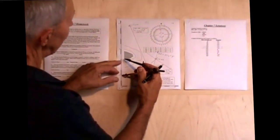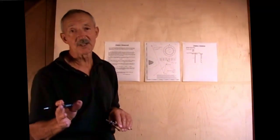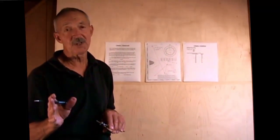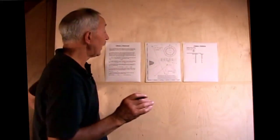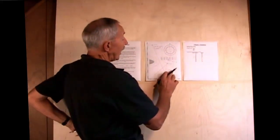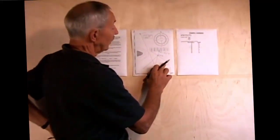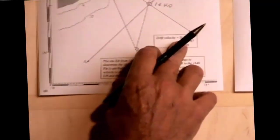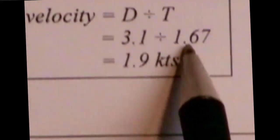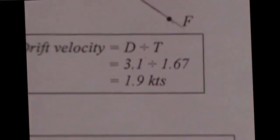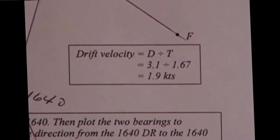So the distance was 3.1, but that's not the current velocity, that's not the drift speed. That's the distance for 1 hour and 40 minutes. What I want to calculate is velocity, which is distance over time. That is 3.1 divided by 1.67 hours, or 1.9 knots. So the current drift velocity was 1.9 knots.